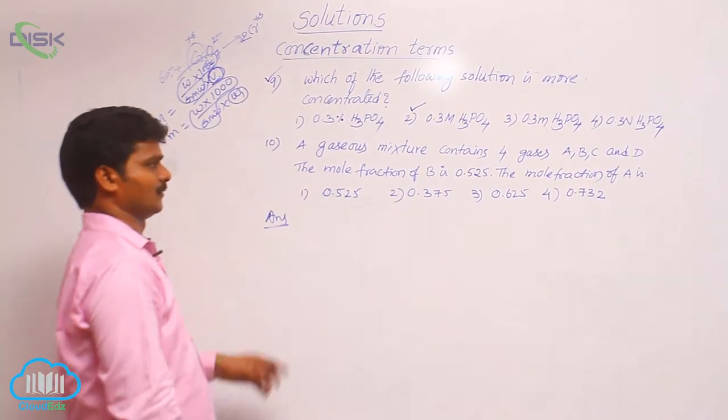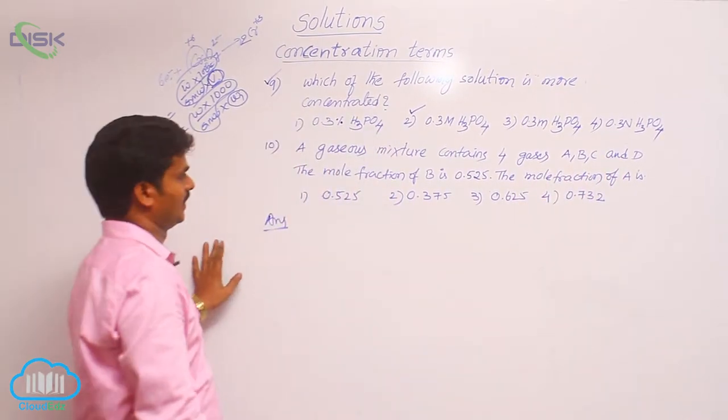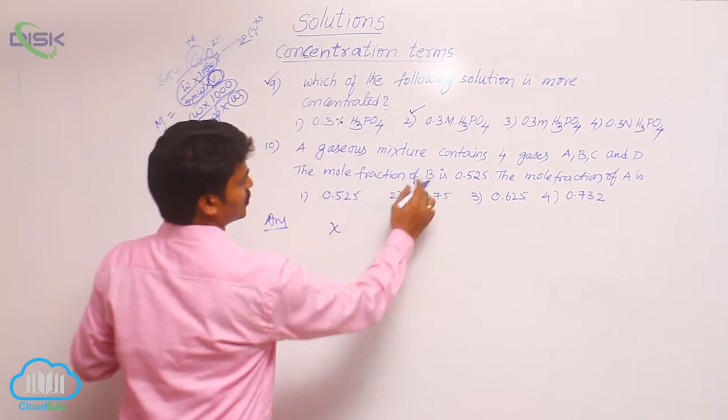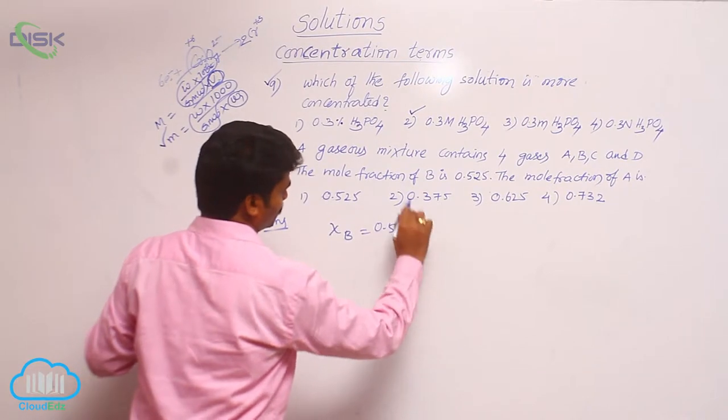Here already 4 components in the solution: A, B, C, D - 4 components in the solution. Mole fraction of one component is given. Which component? Mole fraction of B is given, 0.525.